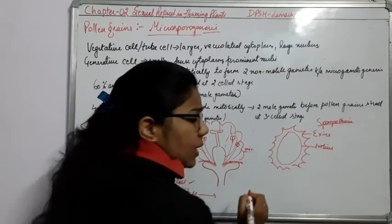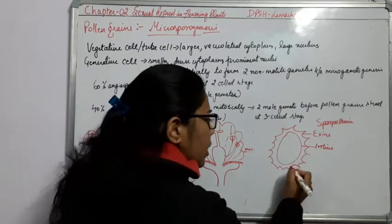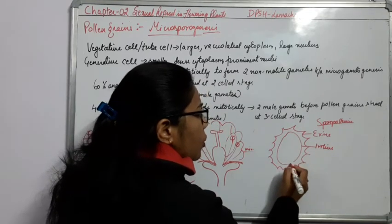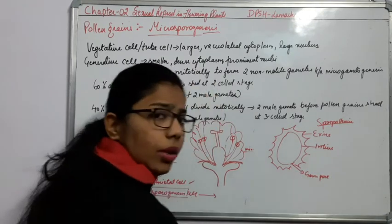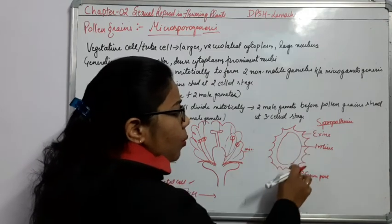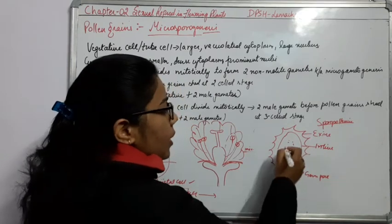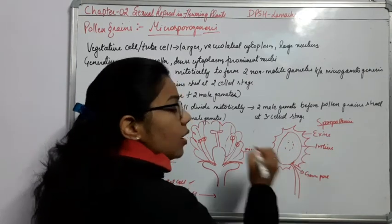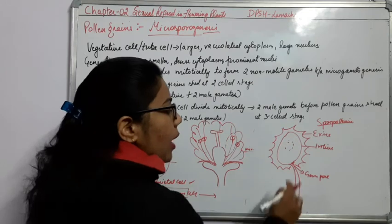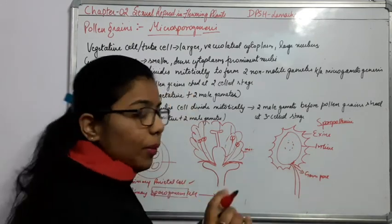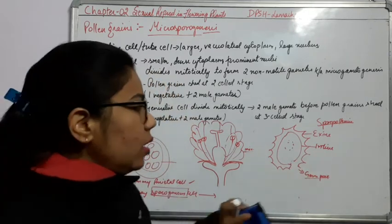Due to the presence of sporopollenin, the microspores or pollen grains get a thicker structure, and due to this we can preserve them as fossils. So the viability of pollen grains is very long. Where the exine is absent, there is a germ pore. This germ pore is important because the pollen grain needs to penetrate via a germ tube, so there should be no exine at that place for forming the germ tube.